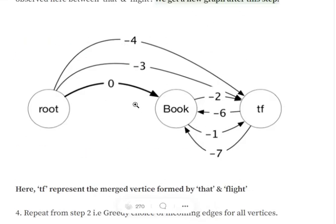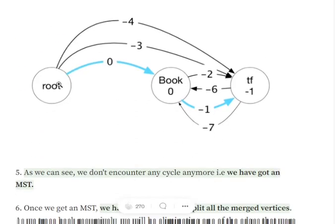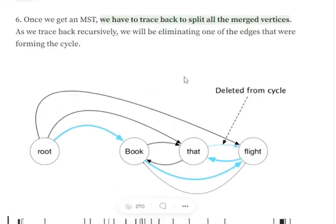We repeat the same process: for each node, we choose the edge with the maximum incoming weight. For 'book' that is 0, and for TF that is minus 1. So we now have the path root → book → TF. If we observe carefully, we have obtained an MST: all nodes are visited once, weights are maximized, there are no multiple incoming edges to any node, and there are no cycles.